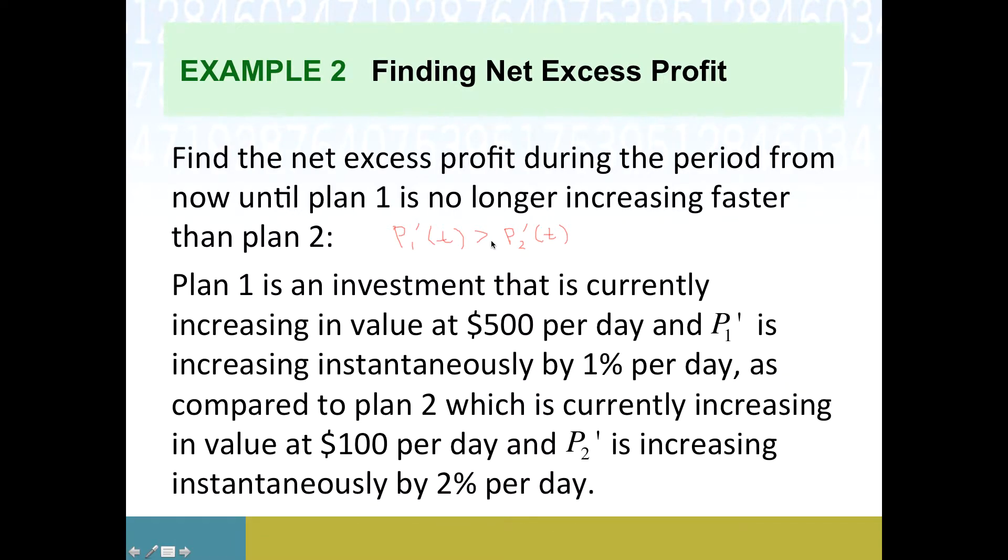So here's our big old wall of text for how these plans are operating. Plan one's an investment that's increasing in value at $500 per day. I want to be really careful about how to dissect this. So the statement that it's increasing in value at $500 per day currently is basically telling me that P1 prime right now is 500. So all of these statements about increasing at a certain rate or what have you are talking about the P prime, the marginal profit, if you will, and that it's increasing instantaneously by 1% per day. And I want to be also super, super cautious about this because when something increases at a percentage rate, that should imply exponential growth. So this is actually saying that P1 prime is an exponential function itself.